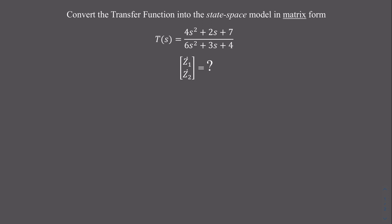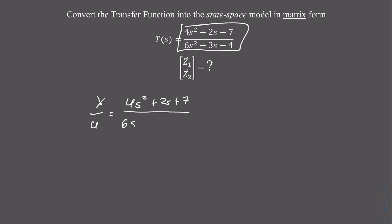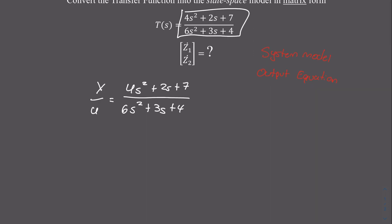In this video, I'm going to be transferring the transfer function into the state space model in matrix form. To start, we first want to make some adjustments to our transfer function. The first step is to write this as y over u equals our transfer function. This will allow us to create a system model and an output equation by separating the top and bottom sections of the transfer function.